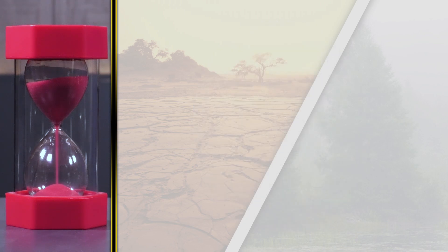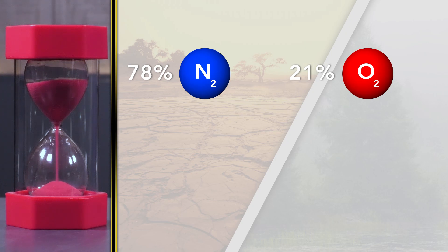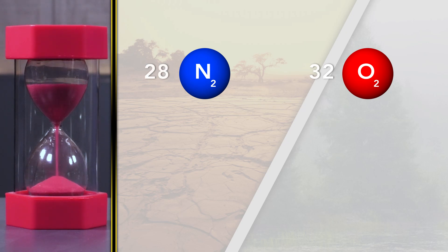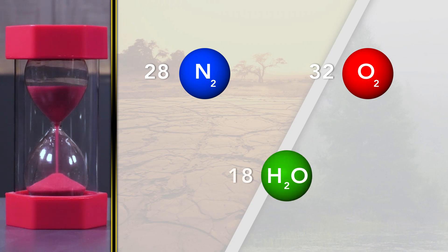Now let's apply that to the Earth's atmosphere. Our atmosphere is 78% nitrogen and 21% oxygen. The remaining 1% is made up of trace gases. The molecular weight of an oxygen molecule is 32, and the molecular weight of a nitrogen molecule is 28. Now here's the kicker: the molecular weight of water, H₂O, is 18. It's measurably less dense than either oxygen or nitrogen.